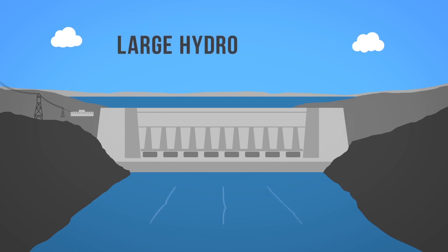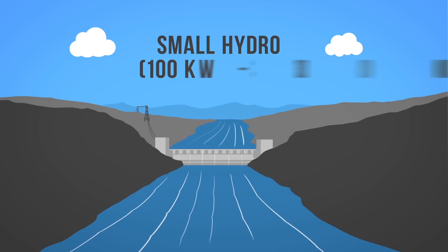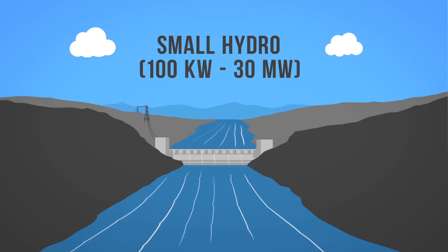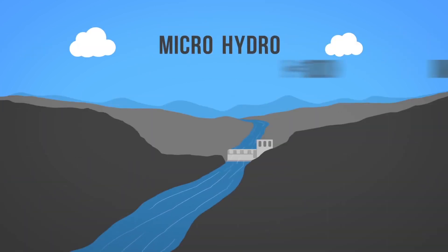There are various sizes of hydro plants that produce electricity: large hydro, greater than 30 megawatts; small hydro, 100 kilowatts to 30 megawatts; and micro hydro, less than 100 kilowatts.